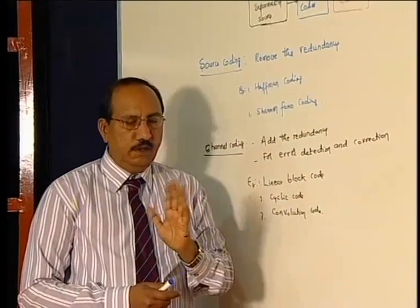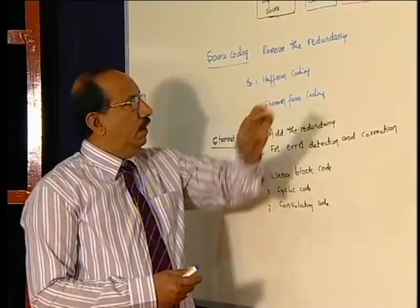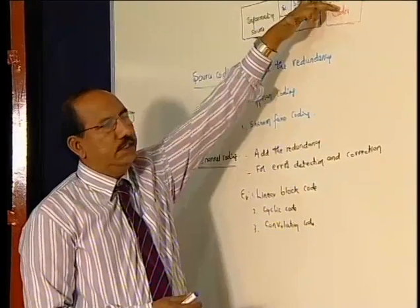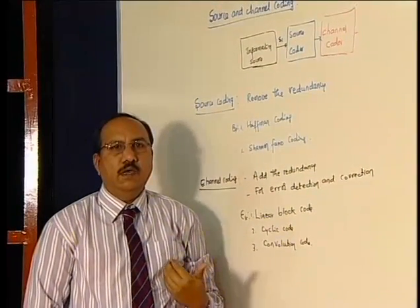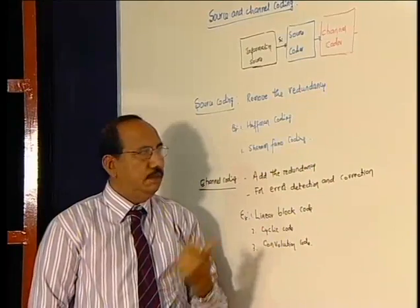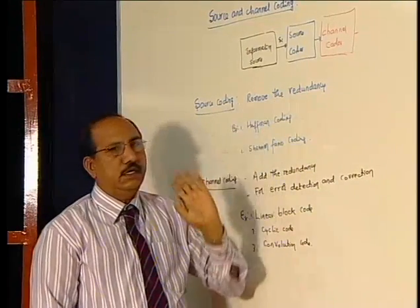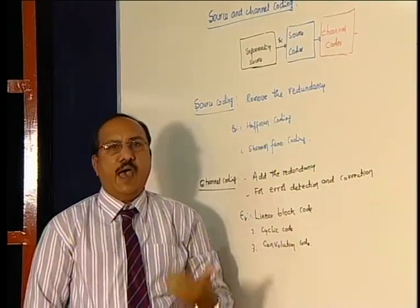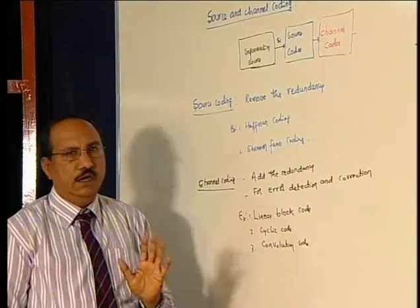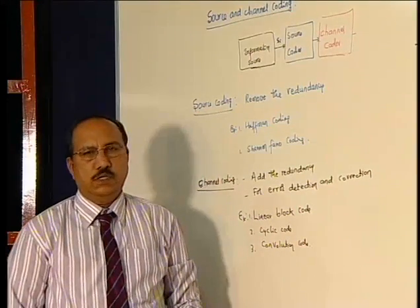So I will make the narrow difference between the source coder and channel coder. In case of source code, based on the probability of the symbol we remove the redundancy, whereas here we are going to add the redundancy. This is the first and the foremost difference between source and channel coder.